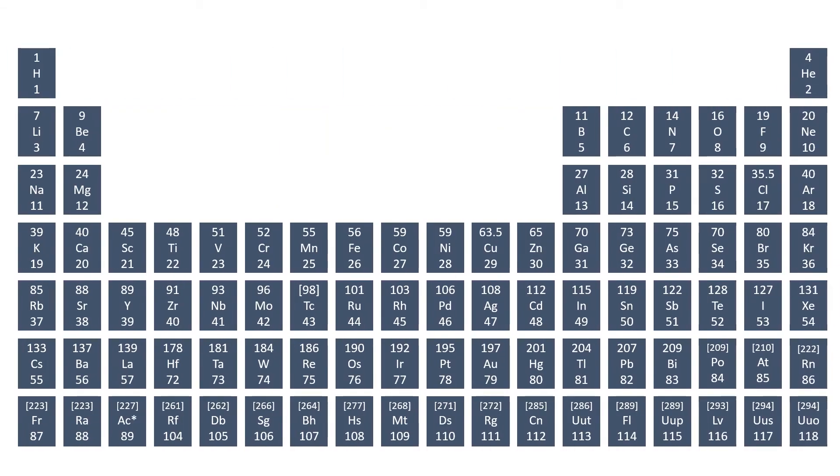Atoms of each element are represented by a chemical symbol. For example, O represents an atom of oxygen and Na represents an atom of sodium.